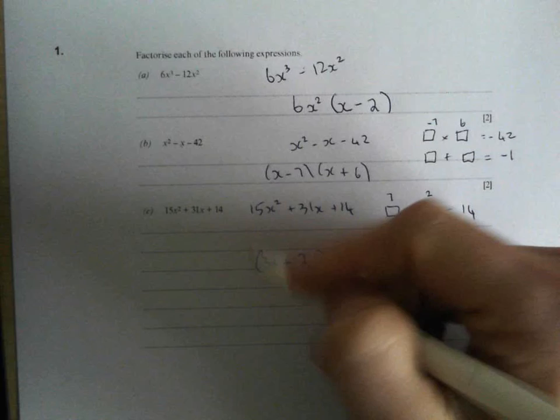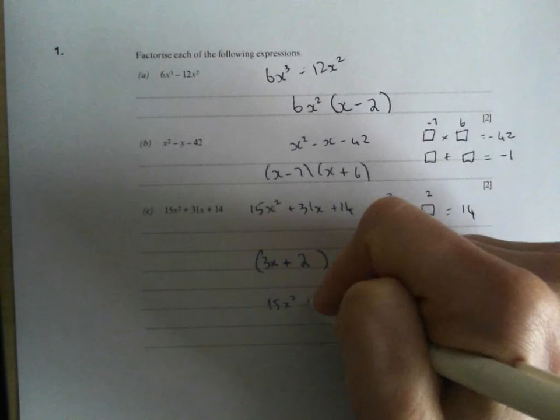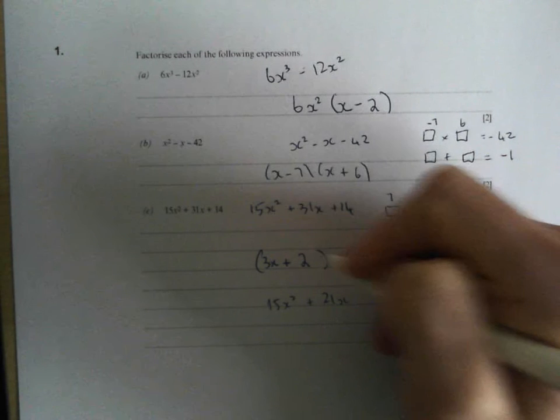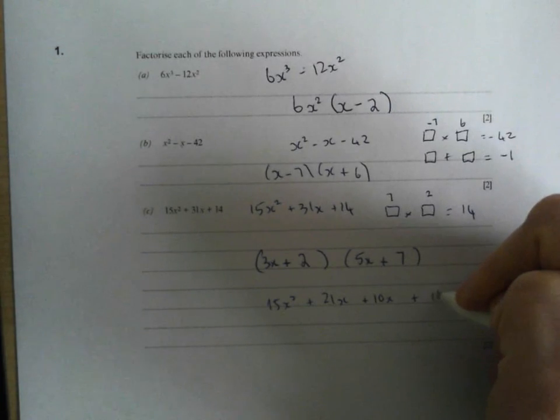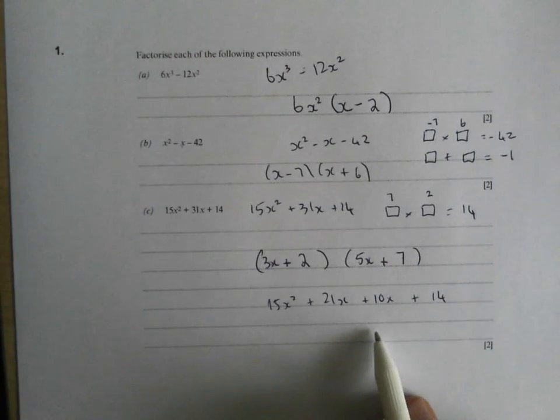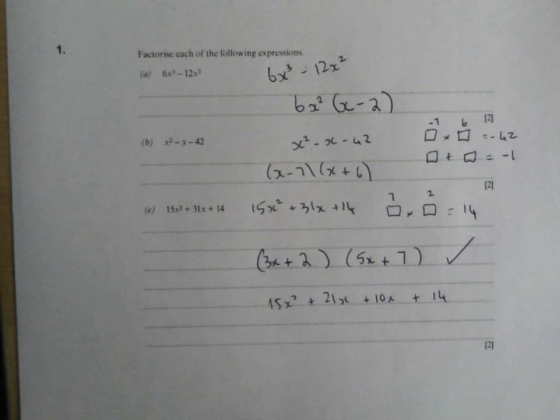3x times 7, that's 21x's. 2 times 5x, that's 10x. And 2 times 7, that's 14. My 21x plus my 10x is going to give me my 31x's. So I must have got that right. As I say, there's loads of different ways and loads of better ways of doing that. But that's just how I do them.